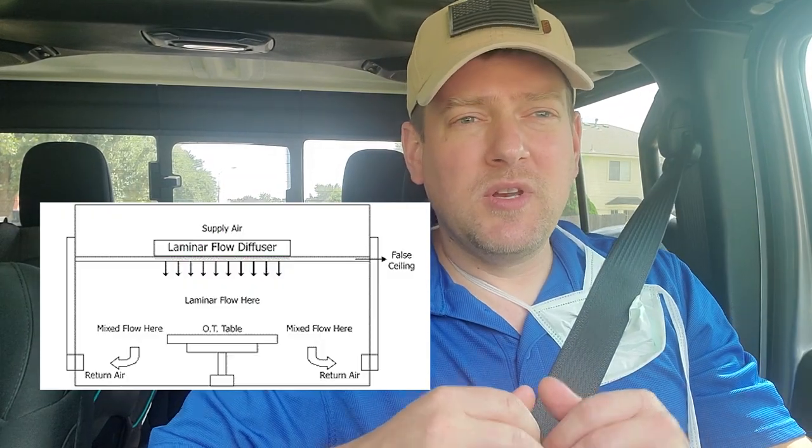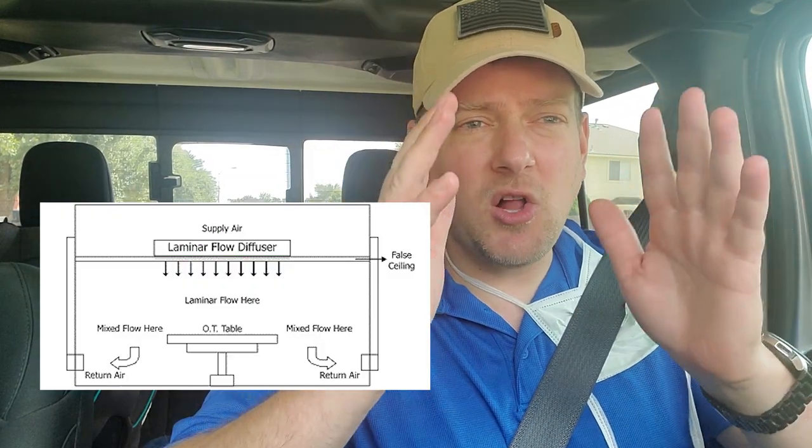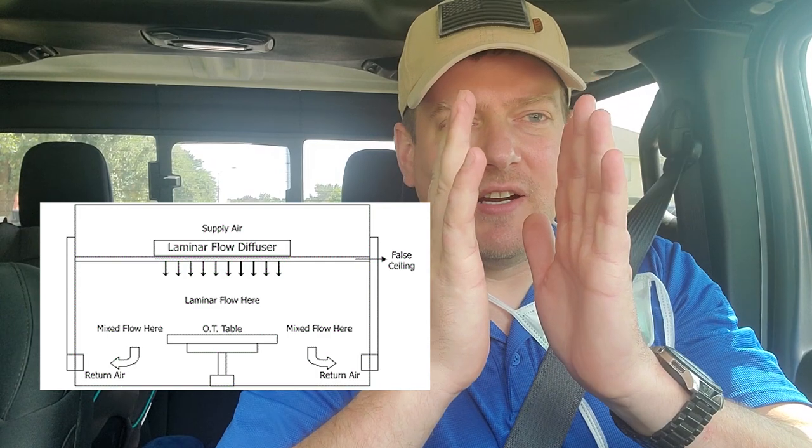Laminar flow is when you have a central column of air that's linear — that's why it's called laminar. There's linear air that comes down straight on top of the operating room table, and from there it goes outwards towards the walls where it's collected up and recirculated back through HEPA filters.